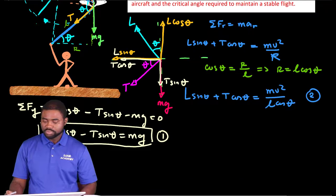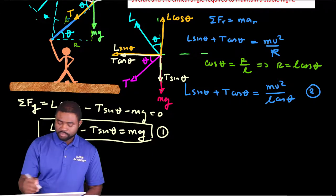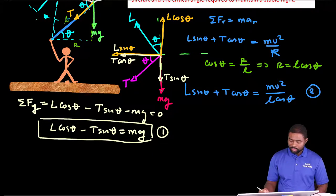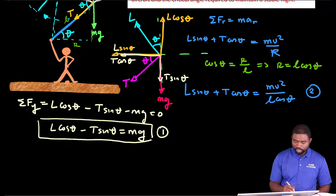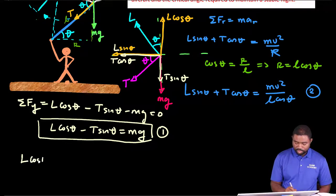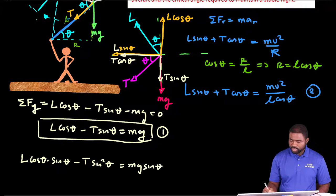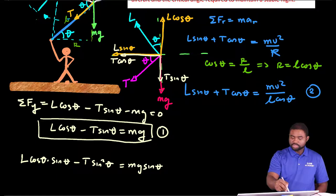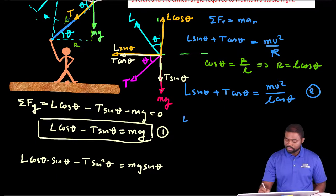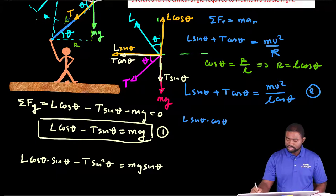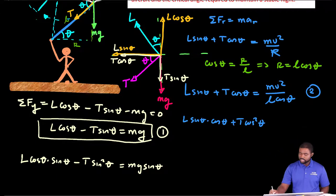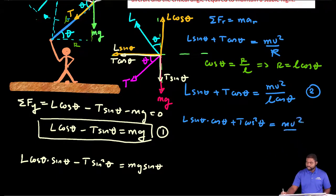Now, what I'm going to do is multiply equation 1 by sine theta and multiply equation 2 by cosine theta. If we do that, we will have L cosine theta sine theta minus T sine squared theta equal to mg sine theta. If I multiply equation 2 by cosine theta, I'm going to have here L sine theta cosine theta plus T cosine squared theta equal to MV squared all divided by L.